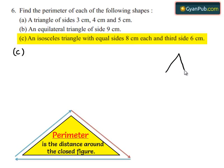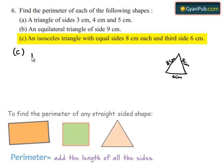Let us consider an isosceles triangle. The length of the sides are 8 centimeters, 8 centimeters, and the third side is 6 centimeters. The perimeter is nothing but the sum of the sides.